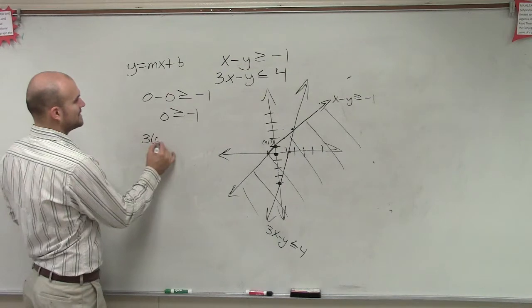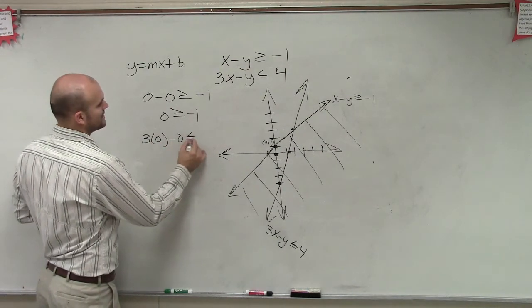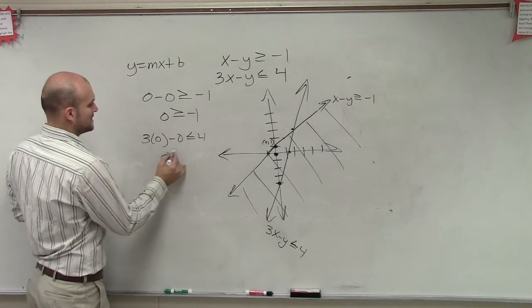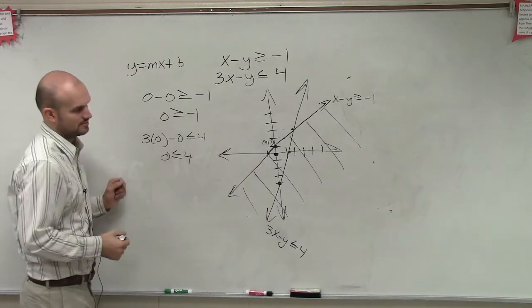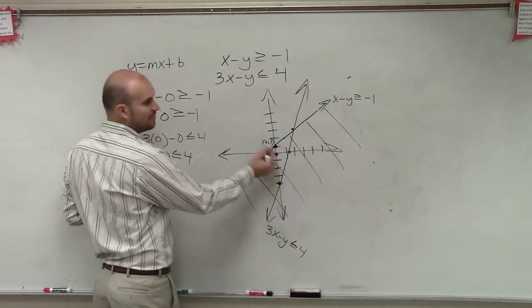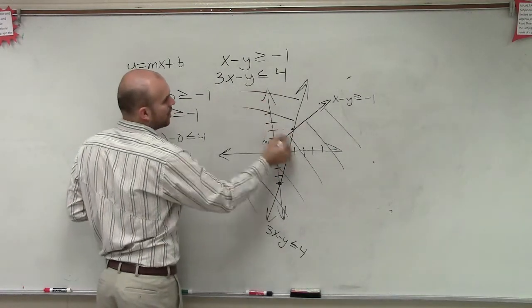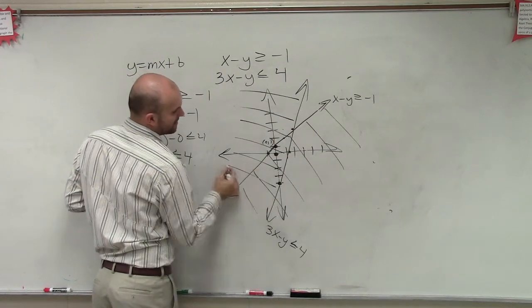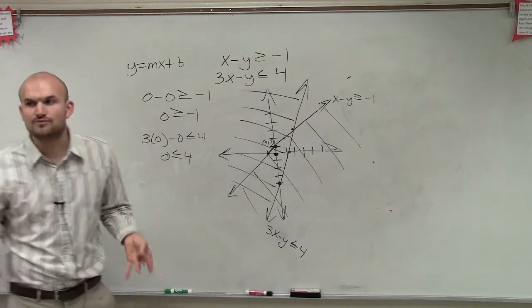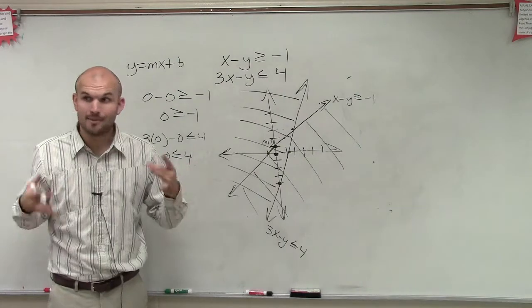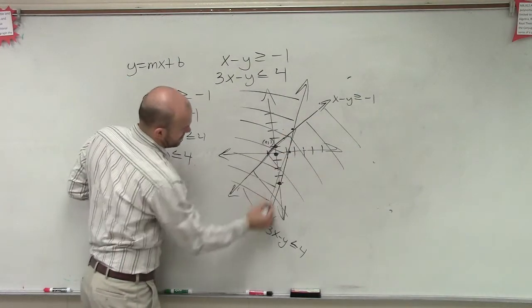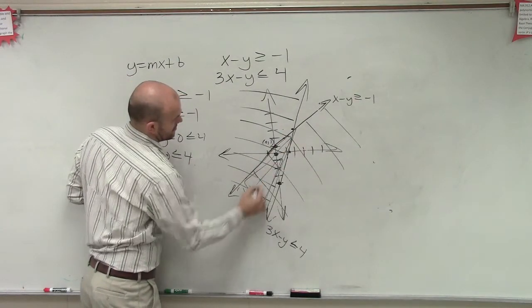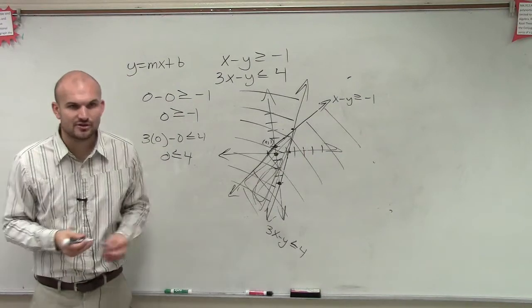Then I test the next one. 3 times 0 minus 0, less than or equal to 4. 0, less than or equal to 4. True or false? True. And since it's above this line, it means all points above the line. However, where is it true for both inequalities? Not one, but both of them. Right there. So that's going to be your feasible region. Make sense?